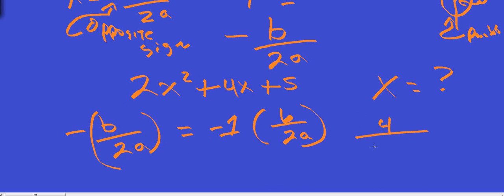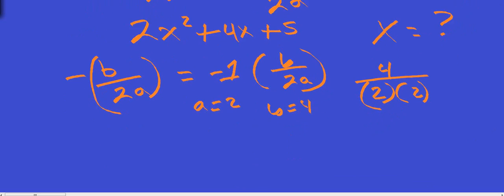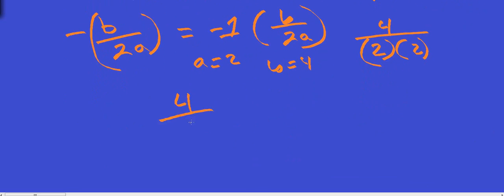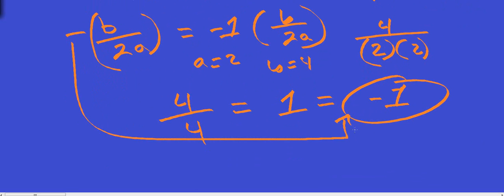We're going to take 2 times 2, because my a is 2. So a equals 2, b equals 4. We've got 4 divided by 4, which is 1. And now, our axis of symmetry is going to be negative 1, because of this negative sign right here. I did my operations, and then at the end, notice I took the opposite sign.